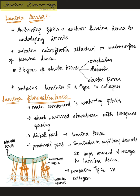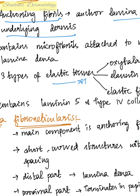In the lamina densa, there are three types of elastic tissues: oxytalan, elaunin, and elastic fibers. The oxytalan fibers run perpendicular to the dermo-epidermal junction. The elaunin fibers attach to the oxytalan fibers, and the elaunin fibers are also attached to the elastic fibers present in the reticular dermis.